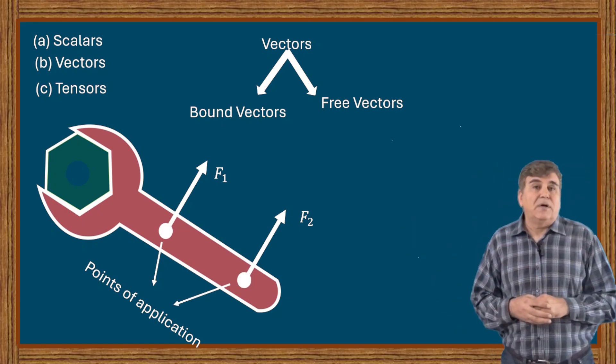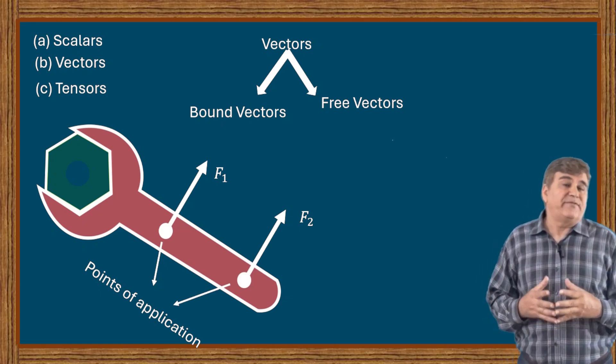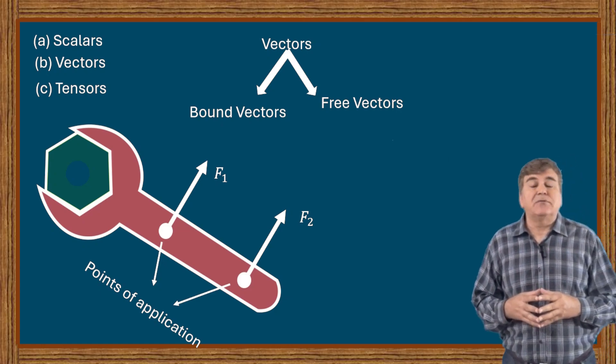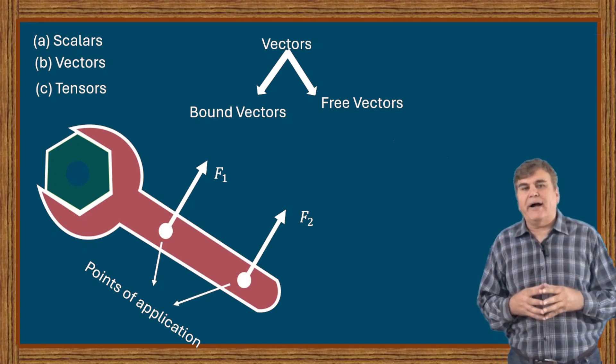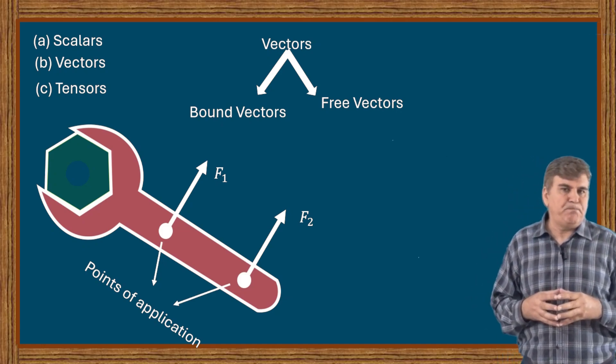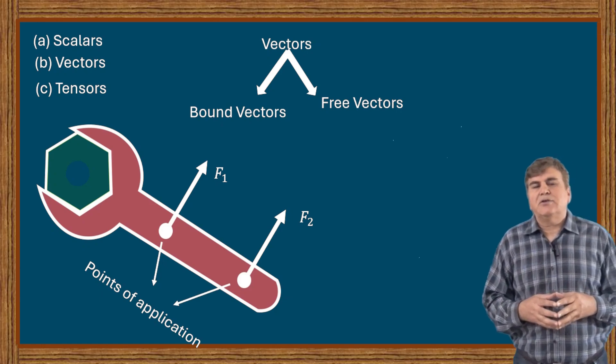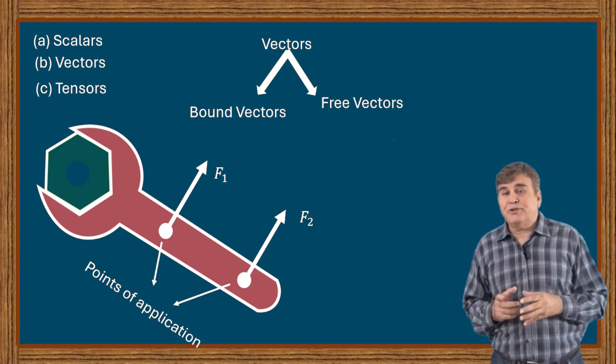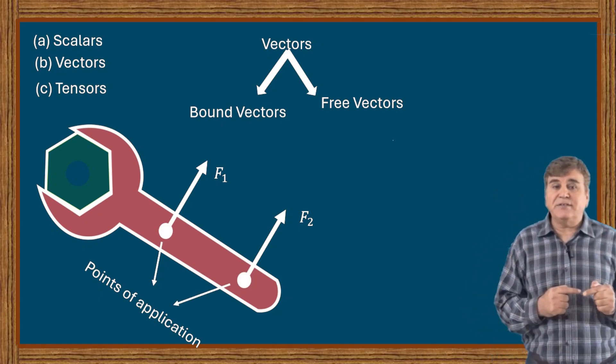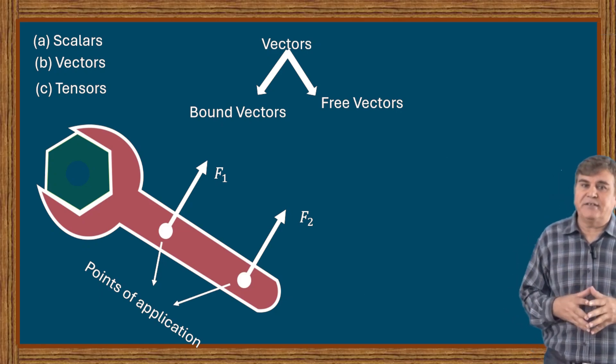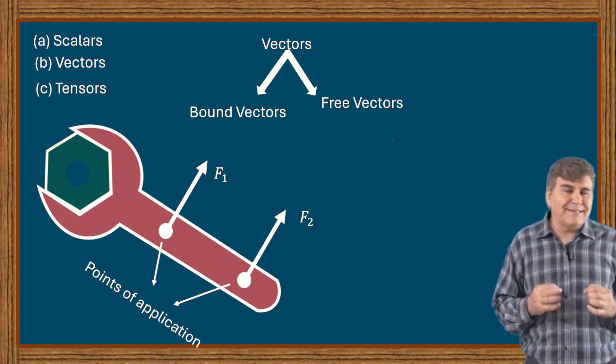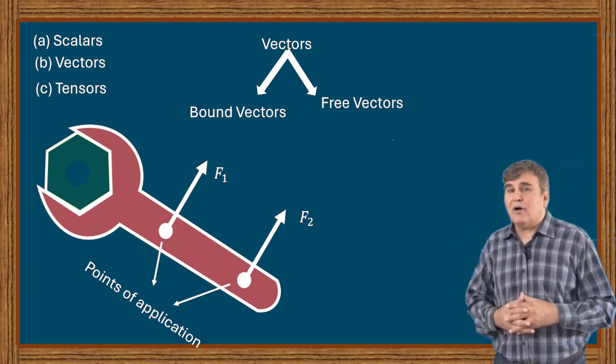Two vectors of same magnitude and direction act on two different points along a beam. Clearly the torque produced at the supporting end and the displacement in these two cases are totally different. Therefore forces like these are called bound forces.